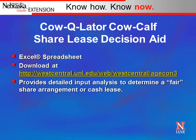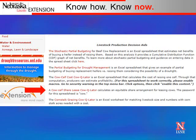The cow-calf share lease decision aid is an Excel spreadsheet available for download at the West Central Research and Extension Center's website. This Excel spreadsheet provides a detailed input analysis to determine what a fair share arrangement or cash lease should be. If you go to that website you'll see a web page pop up — scroll down and look for the cow-calf share lease calculator, click on the hyperlink, allow it to download the Excel spreadsheet, and click yes.